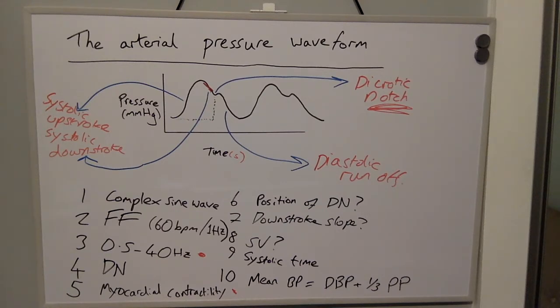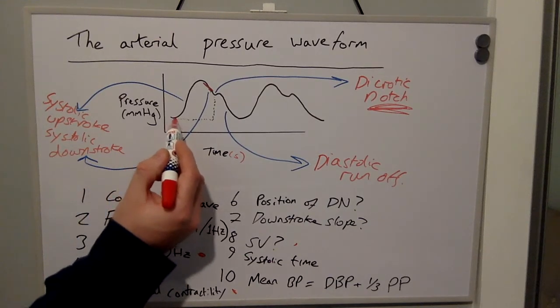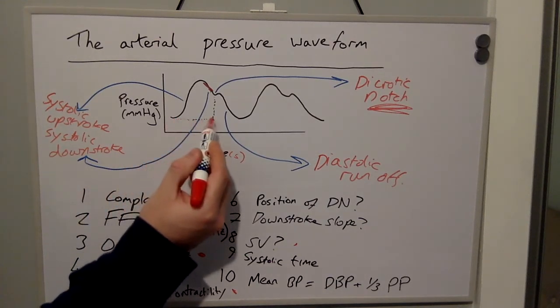Stroke volume can be estimated by measuring the area from the beginning of the upstroke to the dicrotic notch, so this area here.